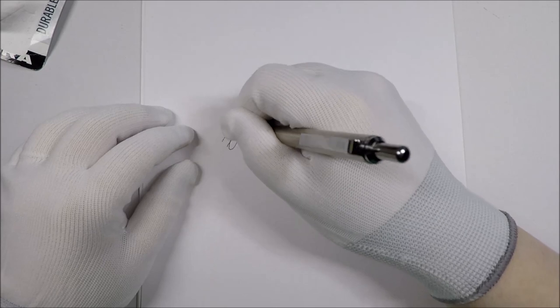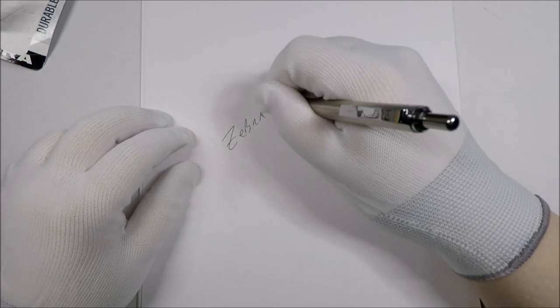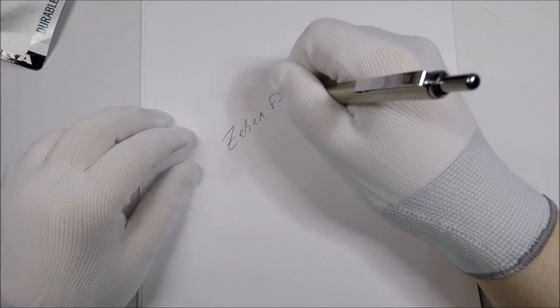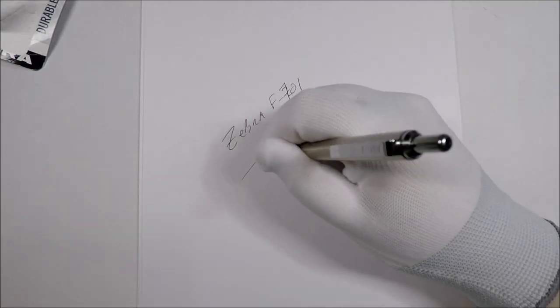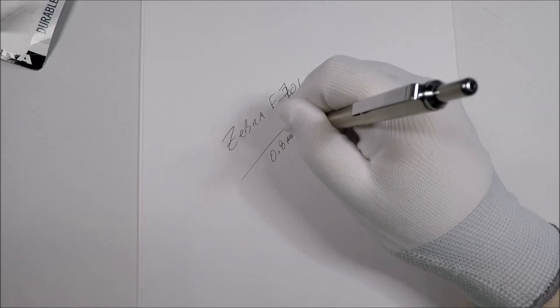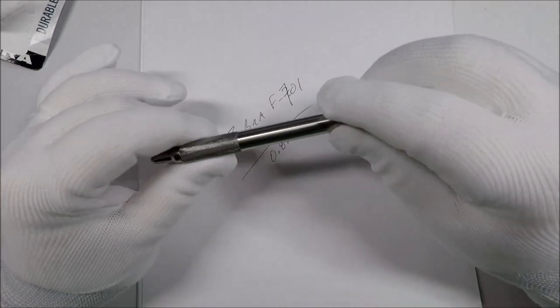So let's try this out. This is a Zebra F701 and this one is 0.8 millimeters. It says it's all metal, so let's look at the all-metalness of it and screws.